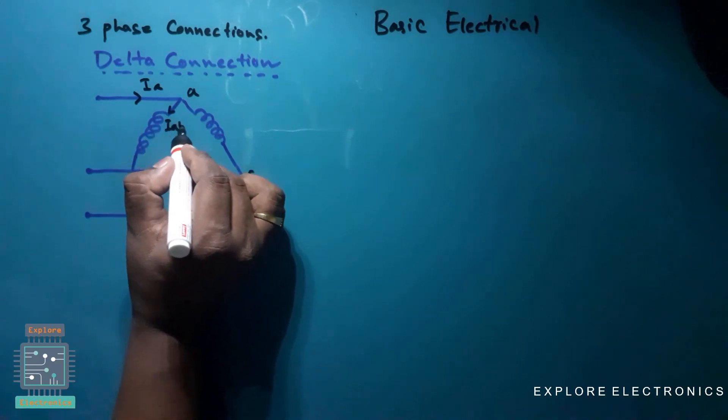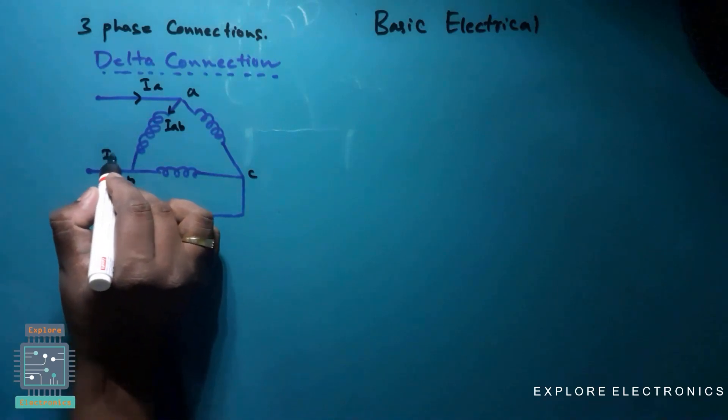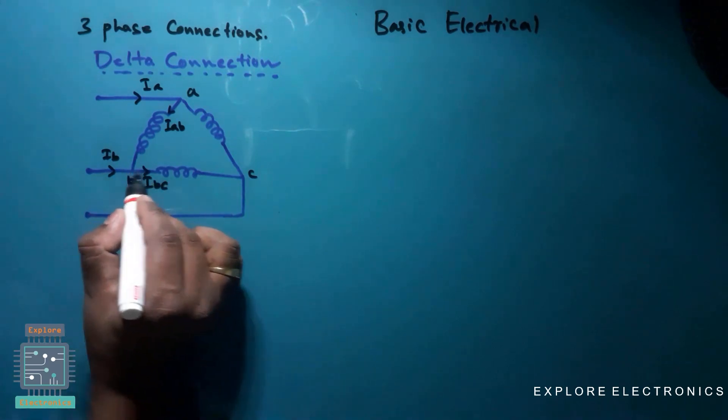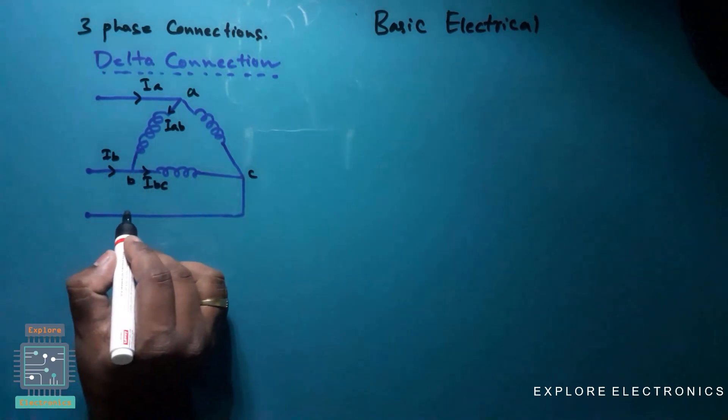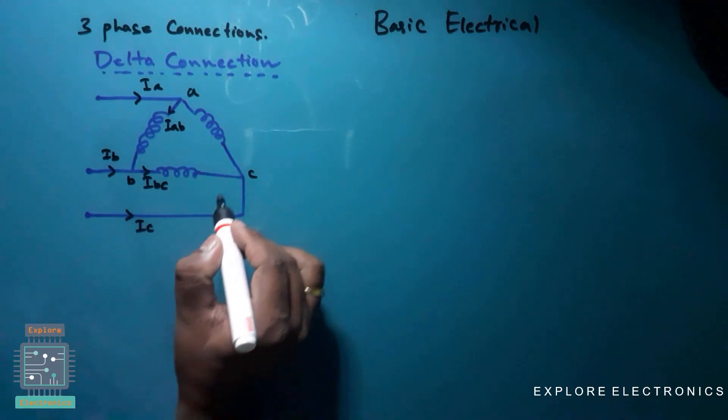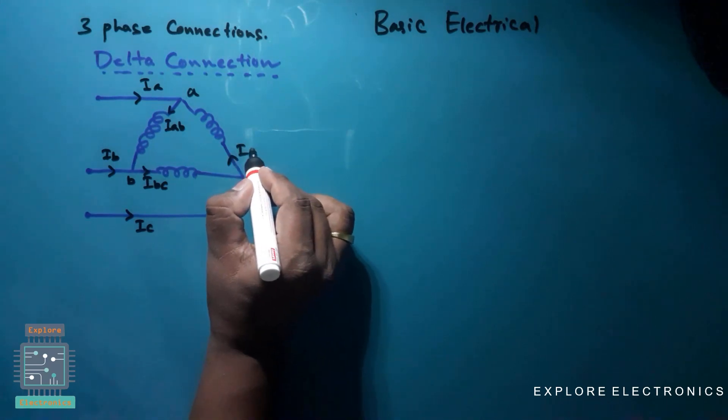Similarly this is Ib, so current flowing through this path is Ibc from B point to C point, and current flowing through this line is Ic and current flowing through this phase is Ica.